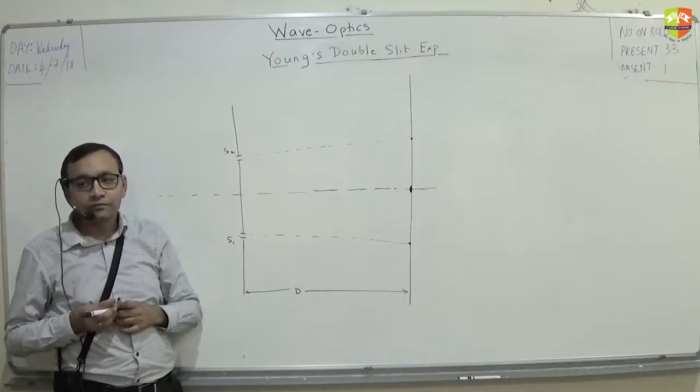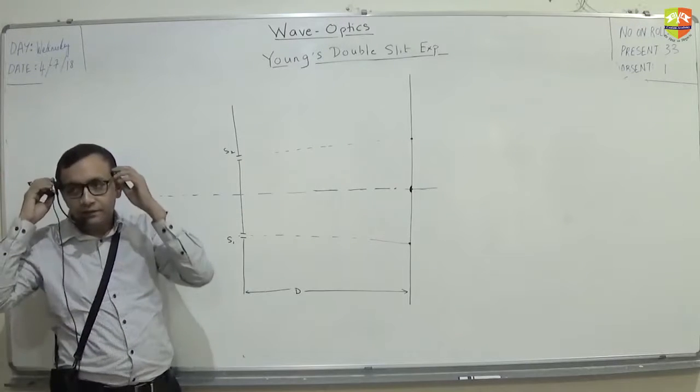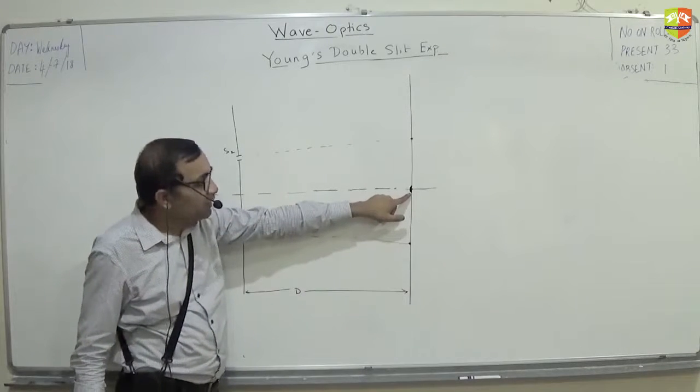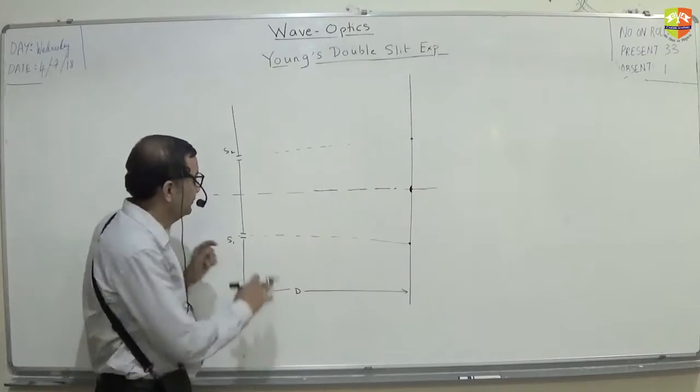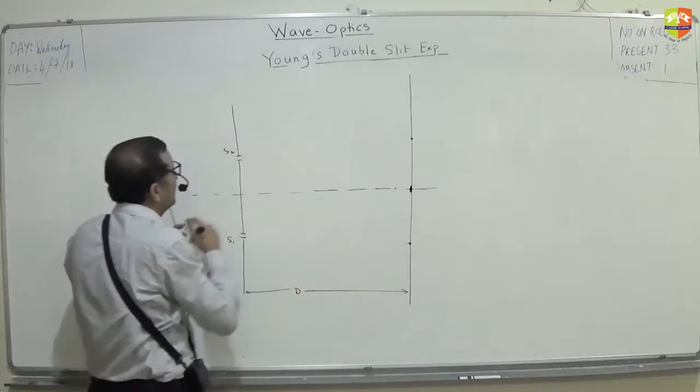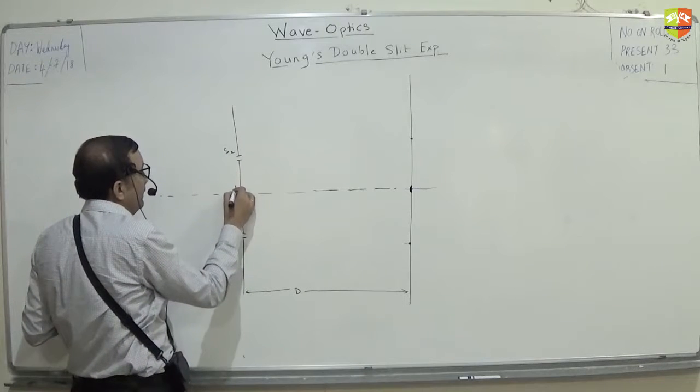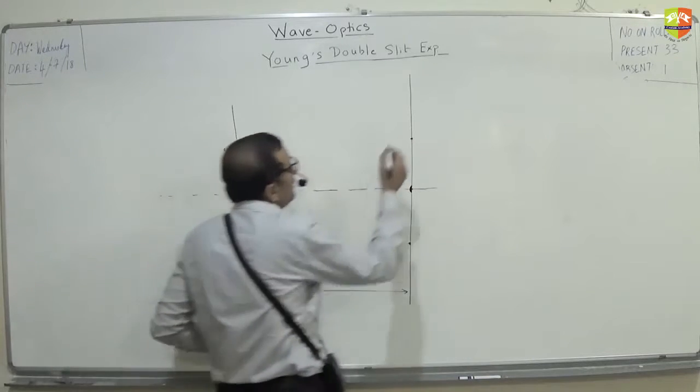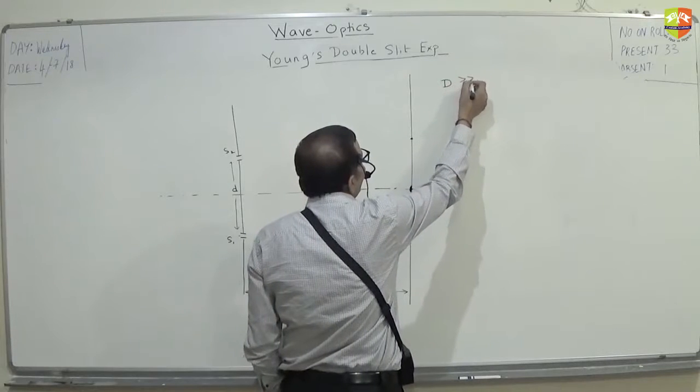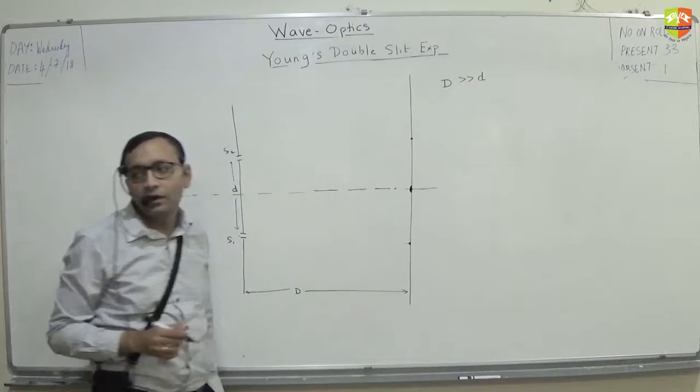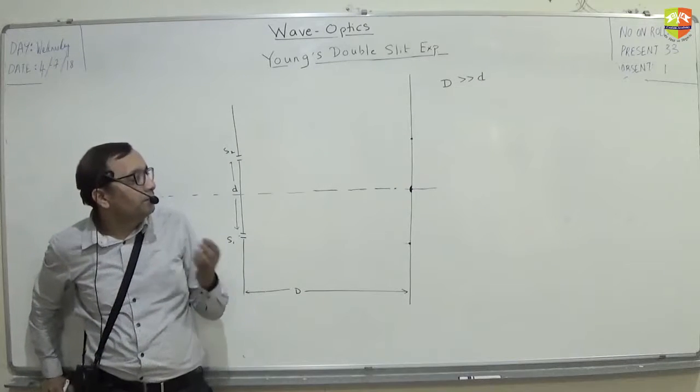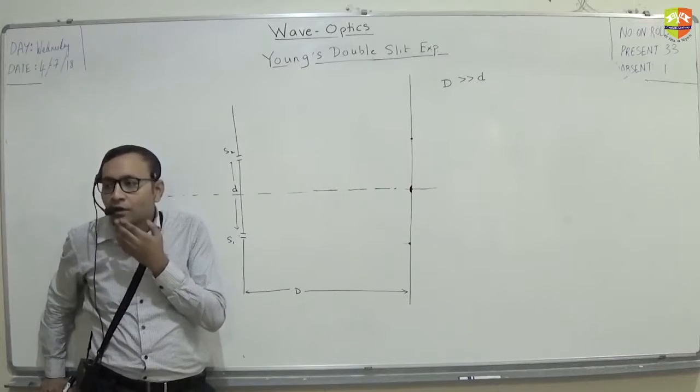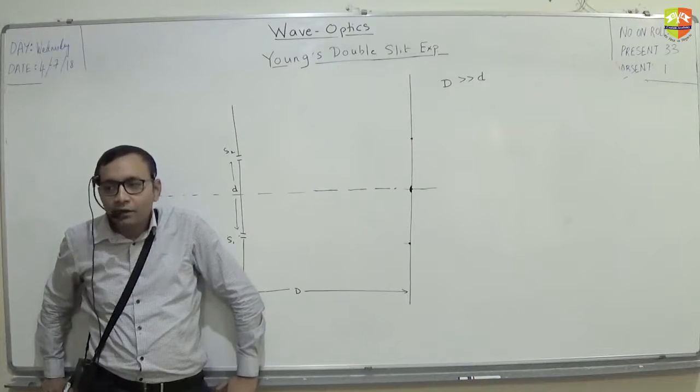So here you observe complete brightness. Now other things that are given in this experiment is that this distance is small d, distance between the slit is small d. And one more thing is given is that D is very large compared to small d. This is how it should be if you are doing Young's double slit experiment. Capital D has to be very large compared to small d.